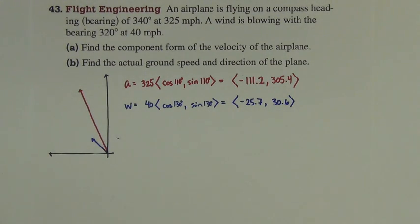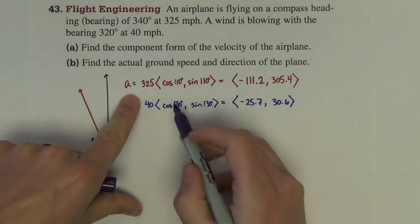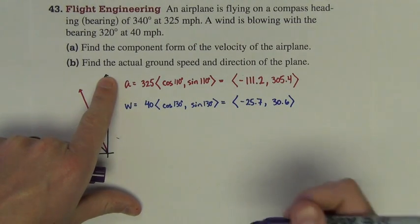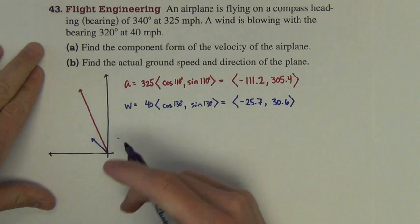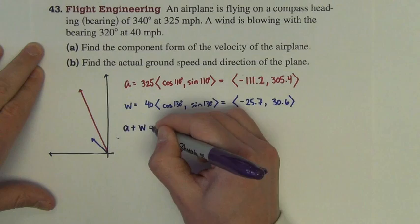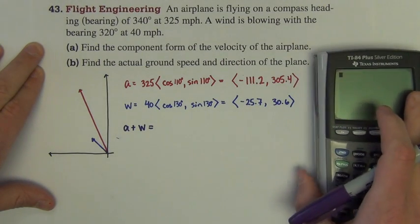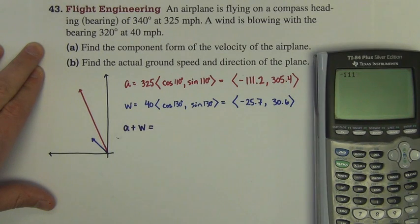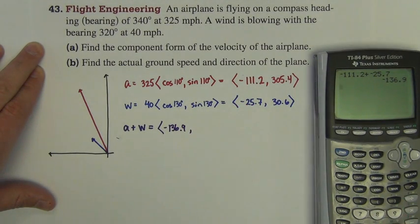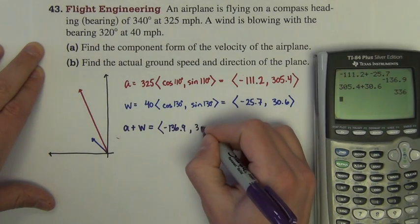That's part A done. Actually, it's a little more than part A. Part A was only asking for the airplane, which is this. But to do part B, we're going to need the wind also. So now part B, find the actual ground speed and direction of the plane. Well, the actual ground speed and direction of the plane is the resultant vector, or comes from the resultant vector, A plus W. I'm going to add these together. So I have negative 111.2 plus negative 25.7, negative 136.9. And then we have 305.4 plus 30.6, 336.